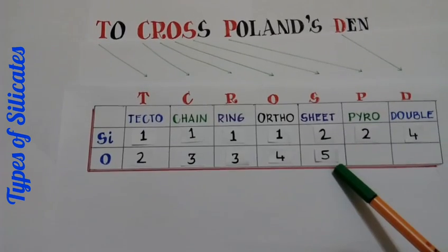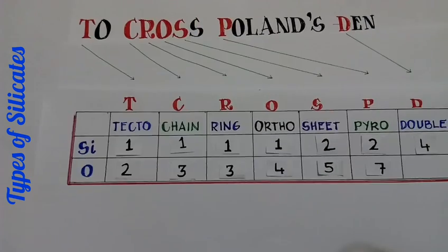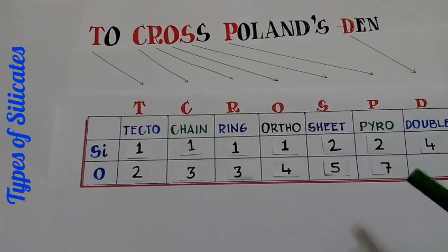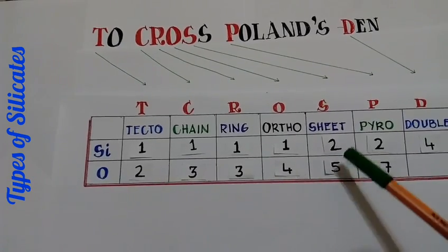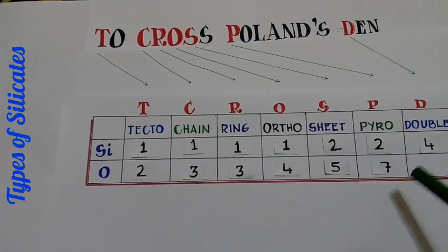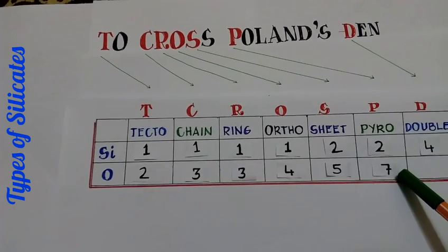When I add five plus two, I get a seven, which I can place in the next column.